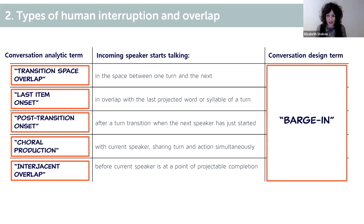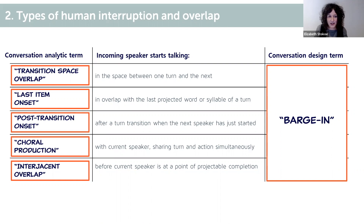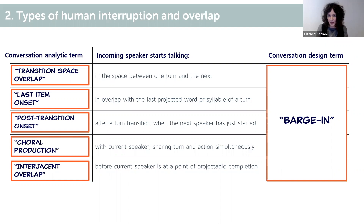You can start to identify a lot more things about different ways of overlapping talk that don't really fit that more morally laden description of 'barge in' or 'interruption.' Whilst conversation designers mostly focus on this kind of interjacent overlap — a barge in. Transition space overlap can occur very innocently when the current speaker has reached the end of a possible unit of talk and then continues as the next speaker starts. Another common form is called last item onset, when the next speaker starts up while the current speaker is uttering the last word or syllables of their turn. All of these things are quite often collaborative rather than competitive. The stereotypical kind of interruption — the interjacent overlap — is where the incoming speaker starts talking before the current speaker has reached a point of possibly finishing their turn, and these are the ones that can feel unwelcome or competitive.